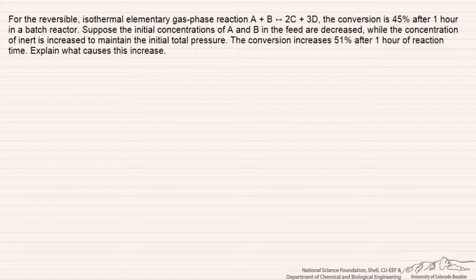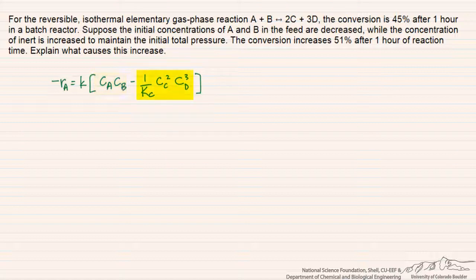To see this, we can write out the expression for the rate of reaction. That expression is shown here, where the rate is equal to a rate constant times the concentrations of the reactants for the forward process, minus the rate of the reverse process — which equals the forward rate constant divided by the equilibrium constant times the concentrations of the reactants raised to their stoichiometric coefficients. We can write the rate law this way because this is an elementary gas phase reaction, so the concentration dependence is reflected in the stoichiometry of the reaction.